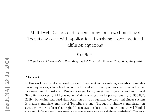This work presents a novel preconditioned method for solving space fractional diffusion equations, building upon the ideal preconditioner proposed by Pestana in 2019. The method begins with standard discretization of the equation, resulting in a non-symmetric multilevel Toeplitz system. A simple symmetrization strategy is employed to transform the original linear system into a symmetric multilevel Hankel system. A symmetric positive definite multilevel tau preconditioner is then proposed for the symmetrized system, which can be efficiently implemented using discrete sine transforms.